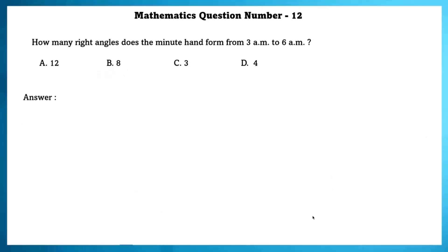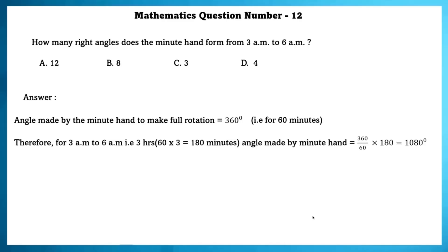Mathematics question number 12. How many right angles does the minute hand form from 3am to 6am? Angle made by minute hand to take field rotation is equal to 360 degrees. Therefore, 3am to 6am that is 3 hours. Since they have asked it in minutes, we are going to convert it into minutes. So, 3 hours is equal to 180 minutes.